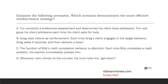C: The function of Billy's math completion behavior is attention. Each time Billy completes a math problem, his teacher immediately praises him. Billy's math completion behavior is maintained by attention — attention is reinforcing for Billy. The teacher is using the function of the behavior to identify reinforcers, and immediately delivers praise when Billy engages in the right behavior. C is better than B because it's quicker, closer to the actual behavior. D: whenever John climbs on the counter, his mom tells him to get down — we're not sure of the consequence or effect. The answer is C.